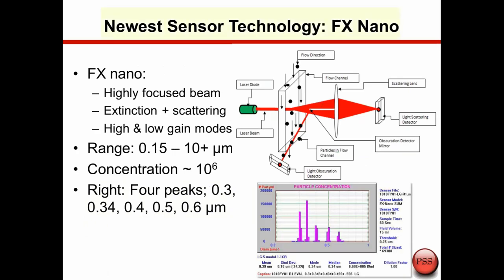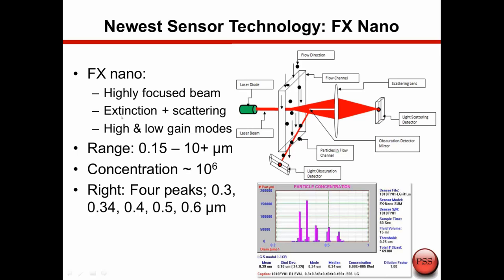The next development was the FX nanosensor, which again uses a focused laser beam for higher intensity. In this case we have both an extinction and a scattering detector. With the higher intensity laser beam and the scattering detector, we can now measure down to smaller particle sizes — down to 0.15 microns or 150 nanometers. The FX nanosensor has a dynamic range of 0.15 to about 10 microns and can also measure at very high concentrations up to 1 million particles per ml. The graph on the lower right shows that even with the deconvolution program we can still resolve multiple peaks — 0.3, 3.4, 4.5, and 0.6 microns resolved to baseline — making it a very high resolution technique.